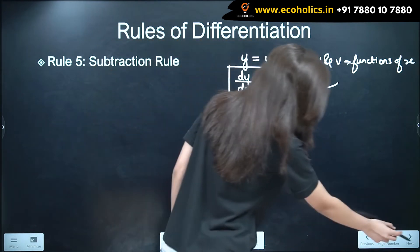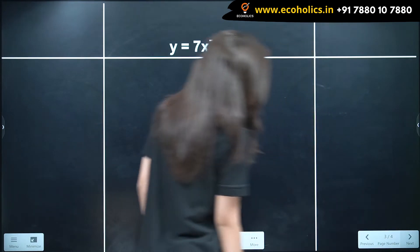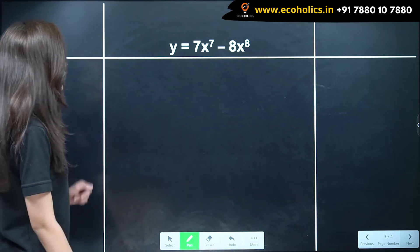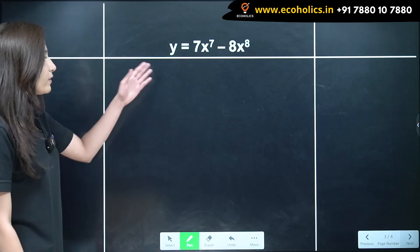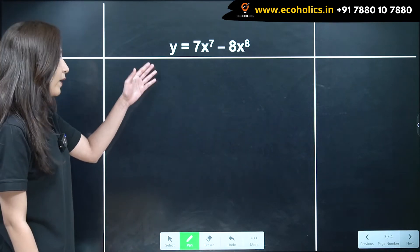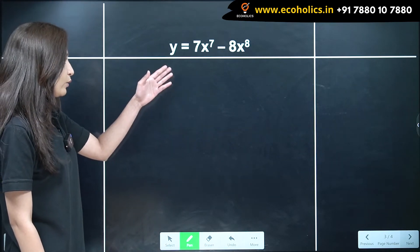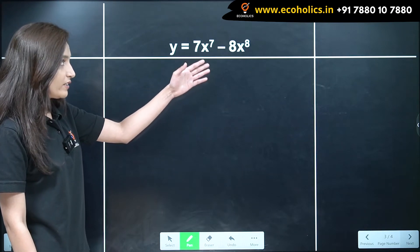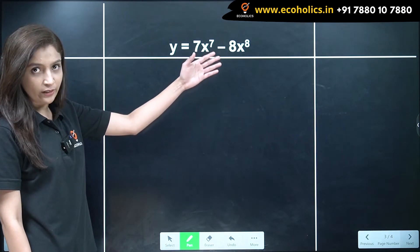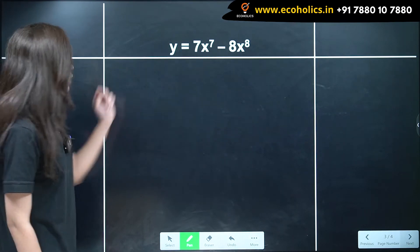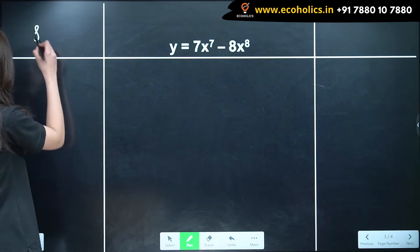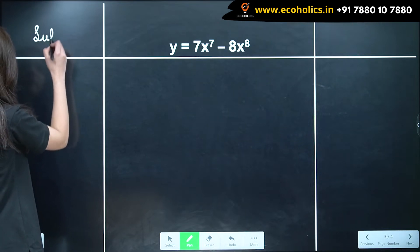Let's look at a few examples to understand this rule. In this case, we have y is equal to 7x raised to 7 minus 8x raised to 8. Now, using the subtraction rule of differentiation.